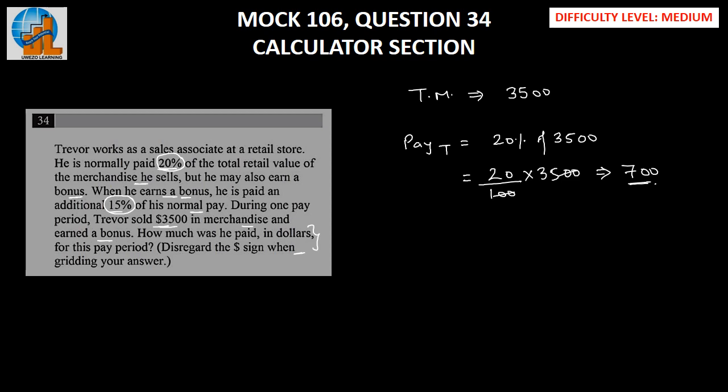But apart from the $700, Trevor is also earning a bonus, which is 15% of his normal pay day. The bonus for Trevor should be 15% of his normal pay day, and that is $700. This implies 15 upon 100 times 700. We can cancel out these two zeros, which implies the bonus for Trevor is $105.